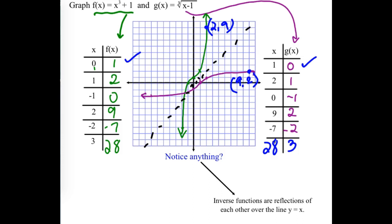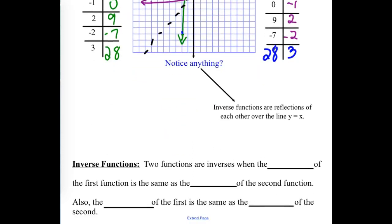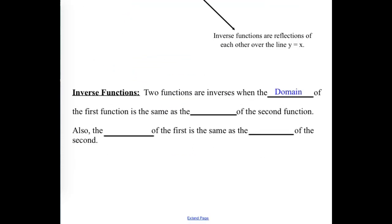If I gave you the green graph and said to graph its inverse, all you'd have to do is pick the key points and switch their coordinates. For inverse functions, the domain of the first one is the same as the range of the second one. The x's in the first function become the y's in the inverse, and the y's — the range — become the x's, the domain of the second one.